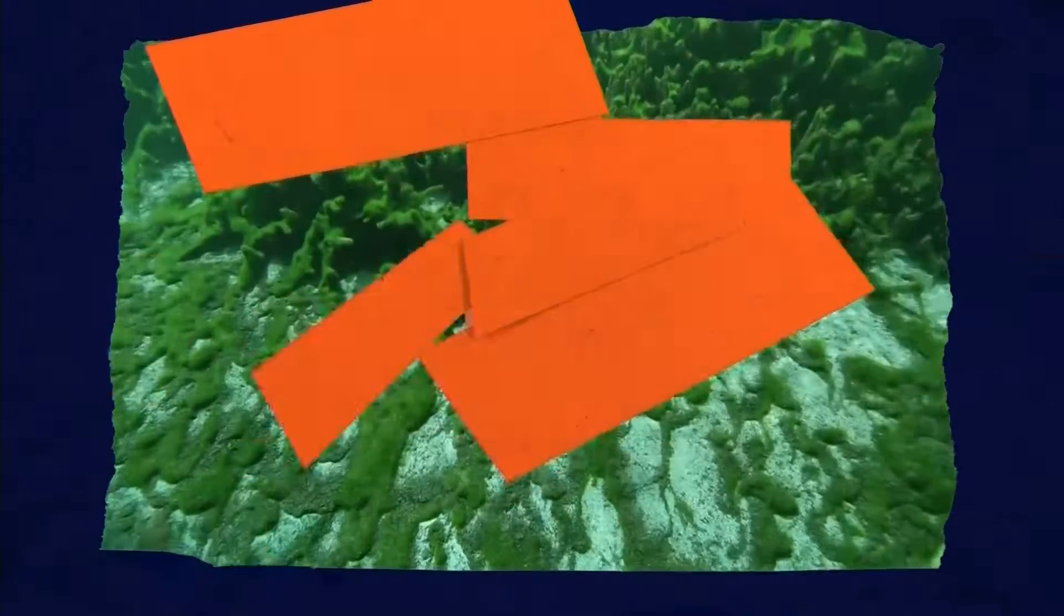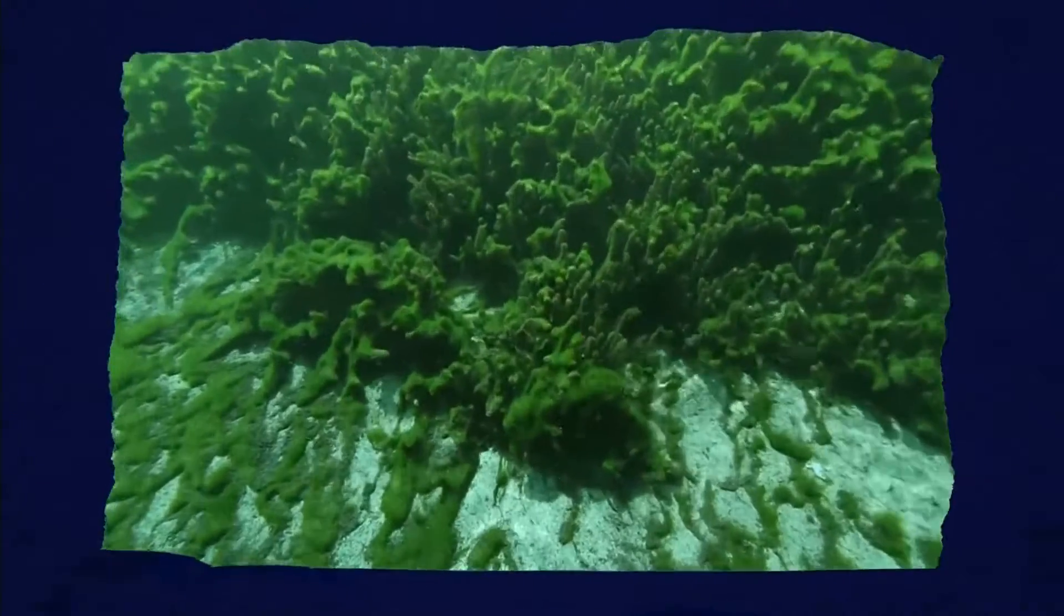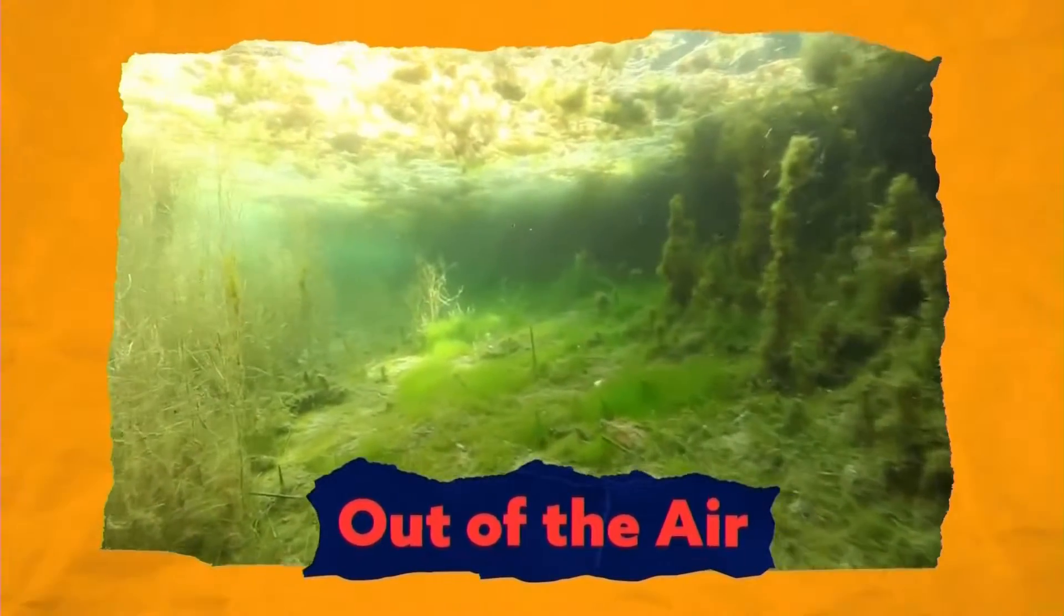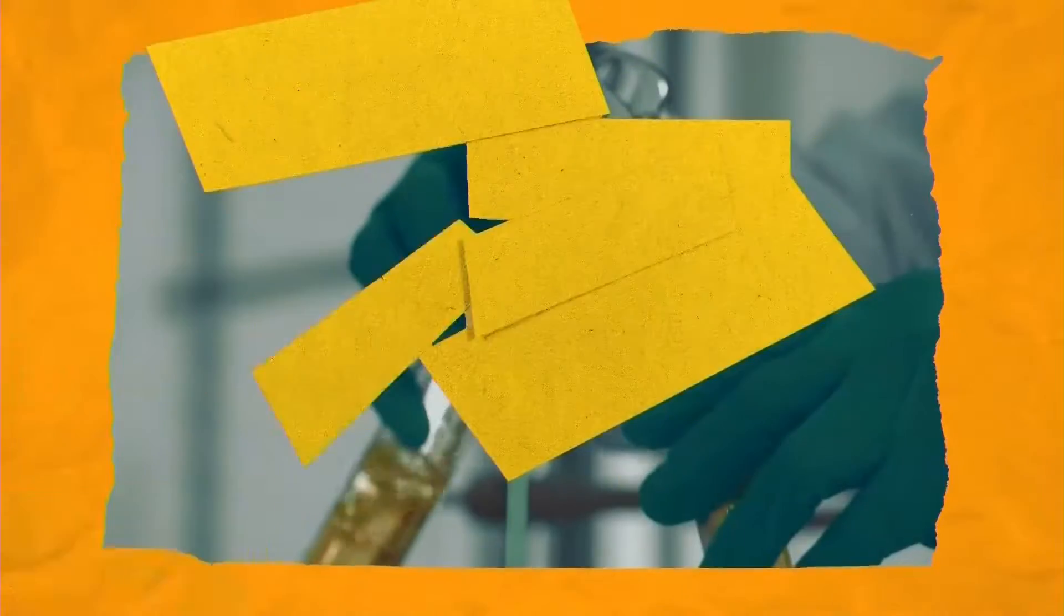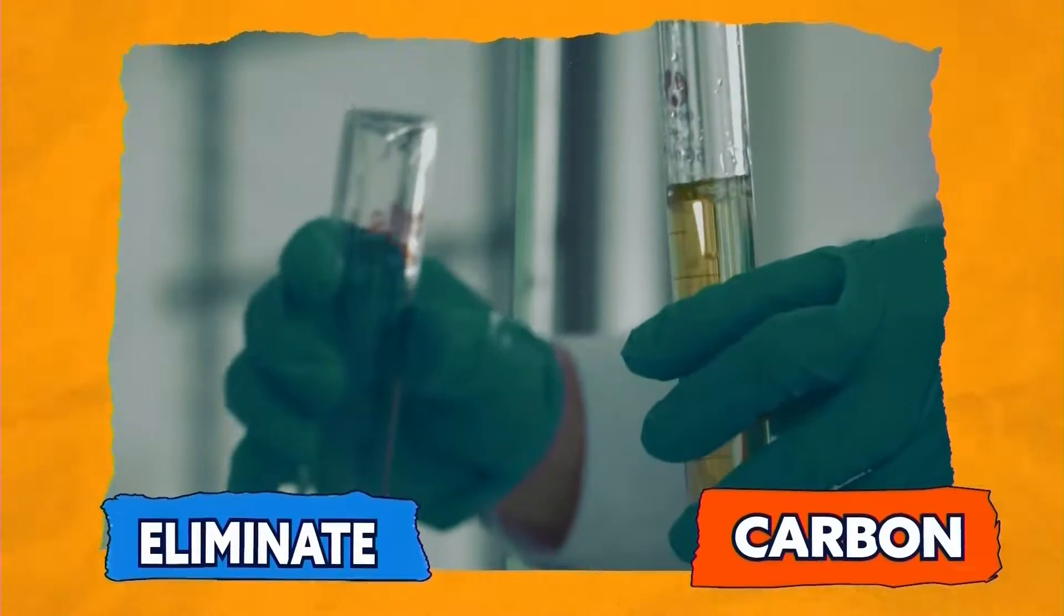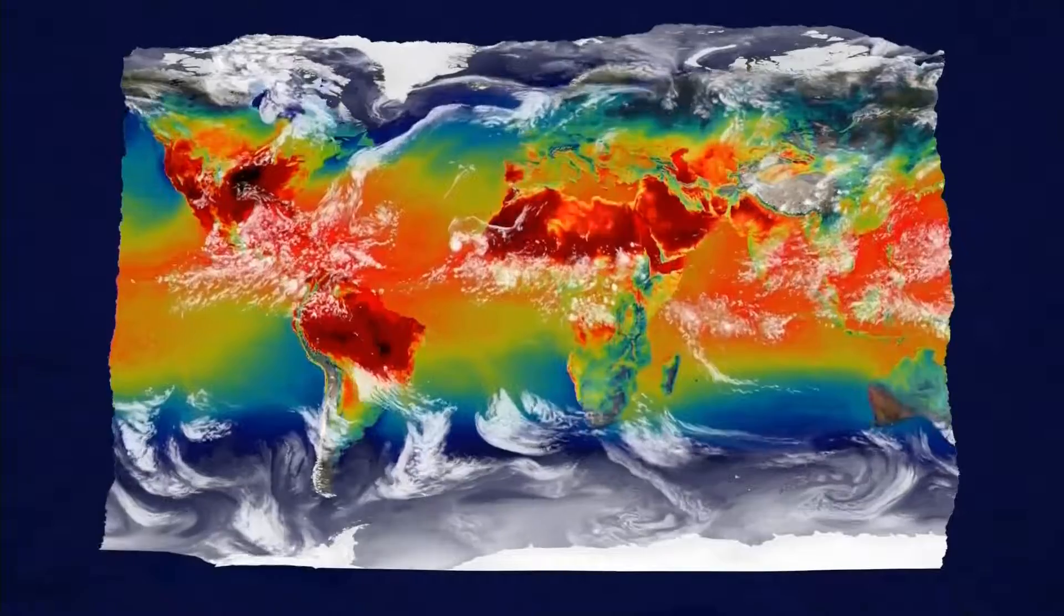What's algae? Algae are organisms or living things found in freshwater lakes or oceans. And one of their superpowers is the ability to suck carbon out of the air. But of the 300,000 species of algae out there, which ones will work best to eliminate carbon and slow down global warming?